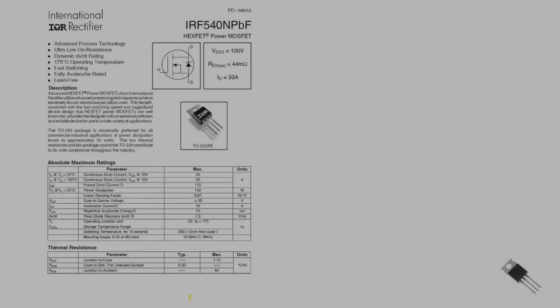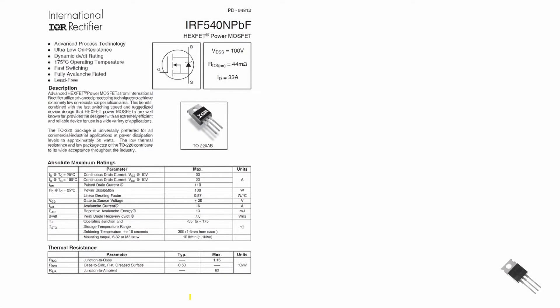Let's look at a spec sheet for a MOSFET and examine the thermal characteristics of the device. There's always a section in the data sheet on the thermal characteristics of the device. Here it's listed as thermal resistance. We see the thermal resistance from the junction to the ambient, and it has a value of 62 degrees centigrade per watt.